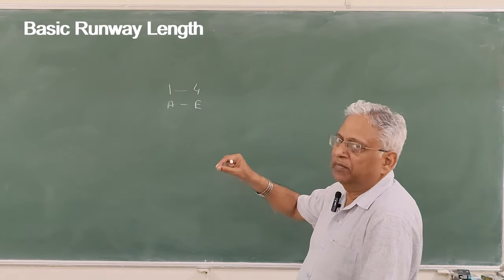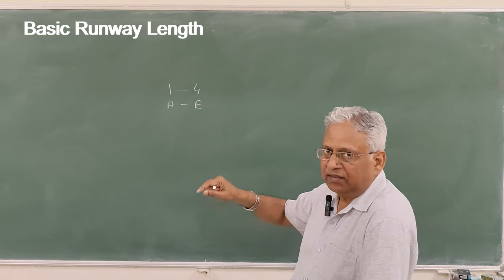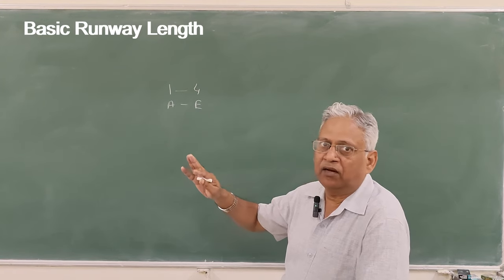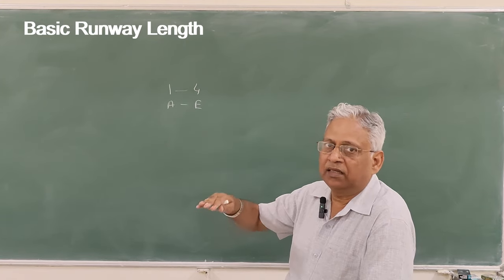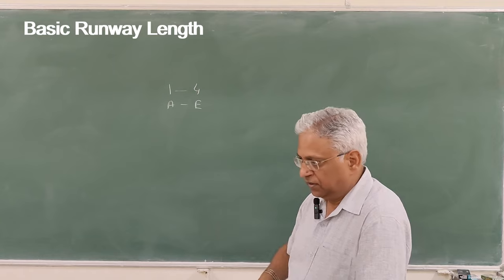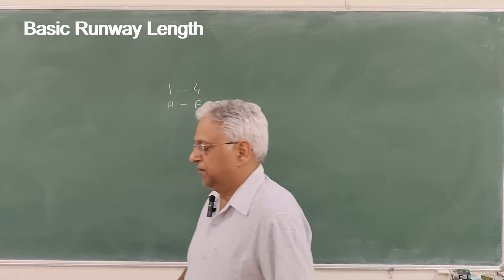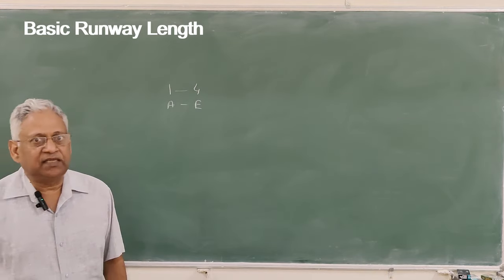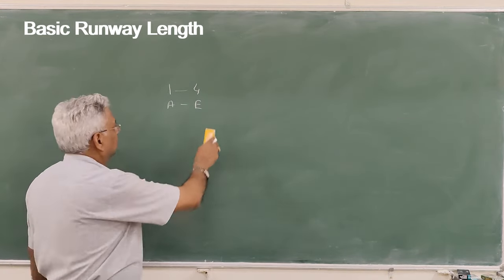In a classification like 4E, the number 4 indicates the basic runway length, and E indicates the wingspan of the aircraft that can be permitted to use the runway. Now what is this basic runway length?